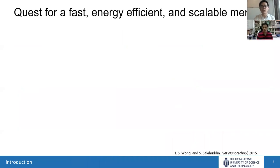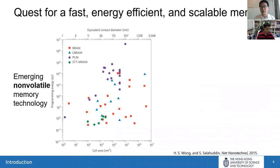The traditional hard disk drive is not up to the task because it requires mechanical motion for reading and writing, making it very slow — on the order of milliseconds. So there is a quest for fast, energy-efficient, and scalable memory. If it can also be non-volatile, that would be best because it can store information without any standby power. People have investigated resistive RAM, conducting bridge RAM, phase-change memory, and spin-transfer torque MRAM.